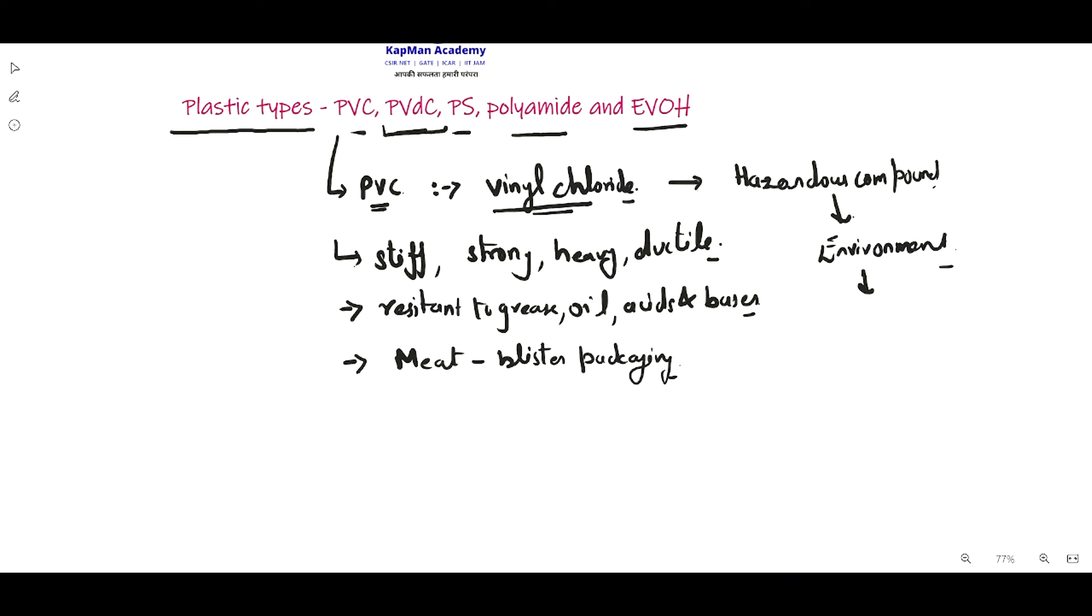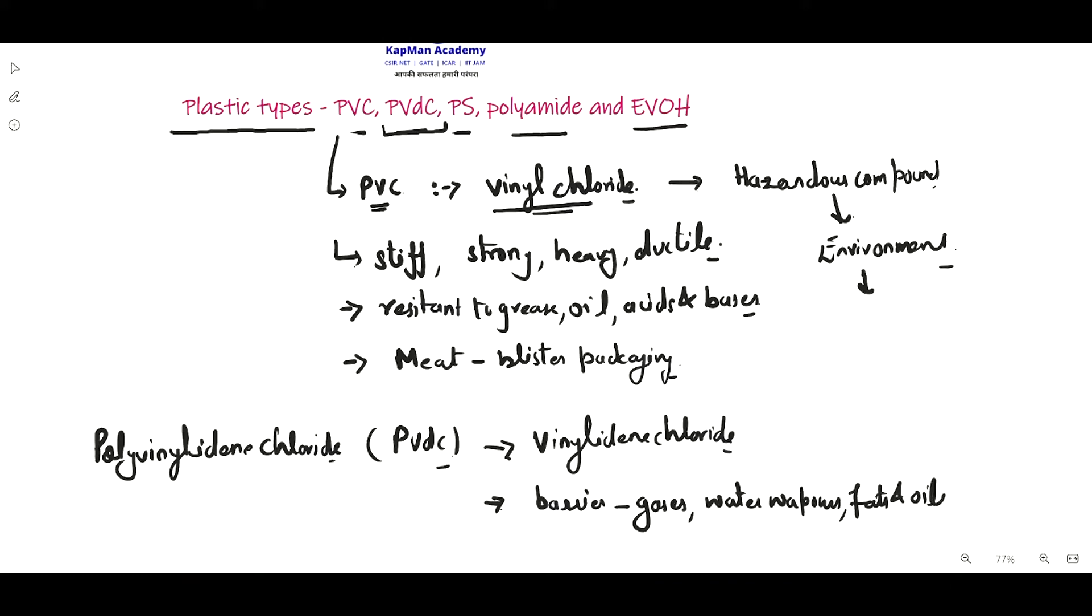The next type of plastic packaging material is PVDC, also known as polyvinylidene chloride. In this case, the monomer unit is vinylidene chloride. It has barrier properties against gases, water vapors, fats, and oils.